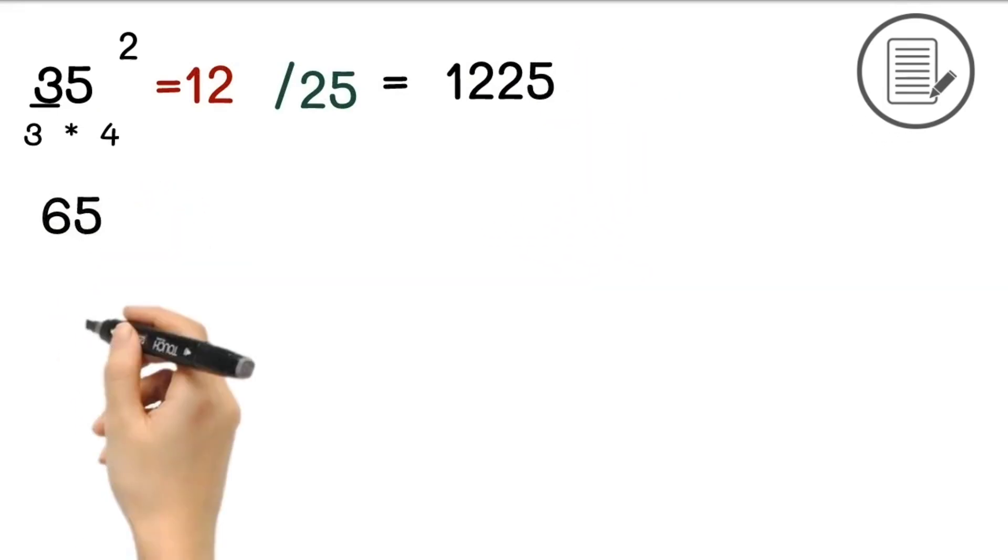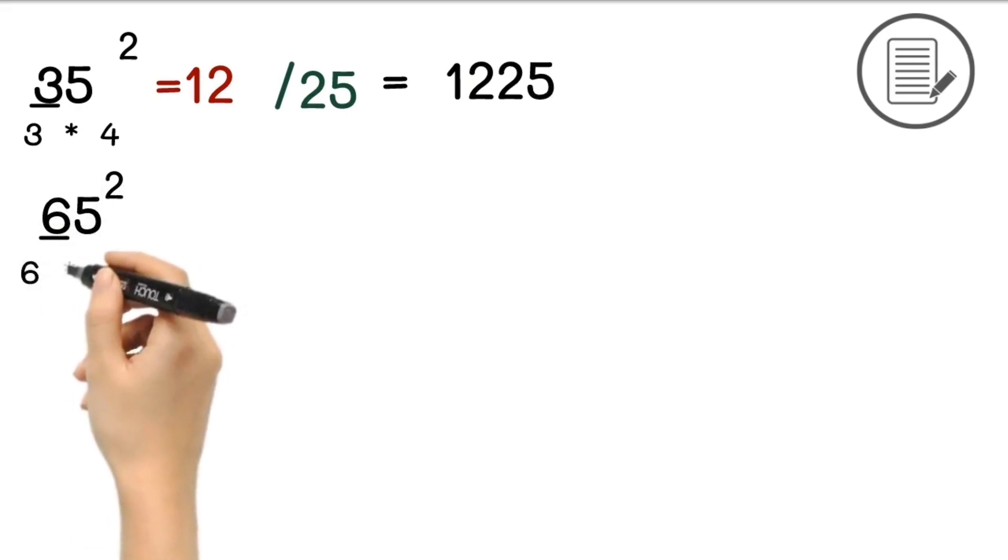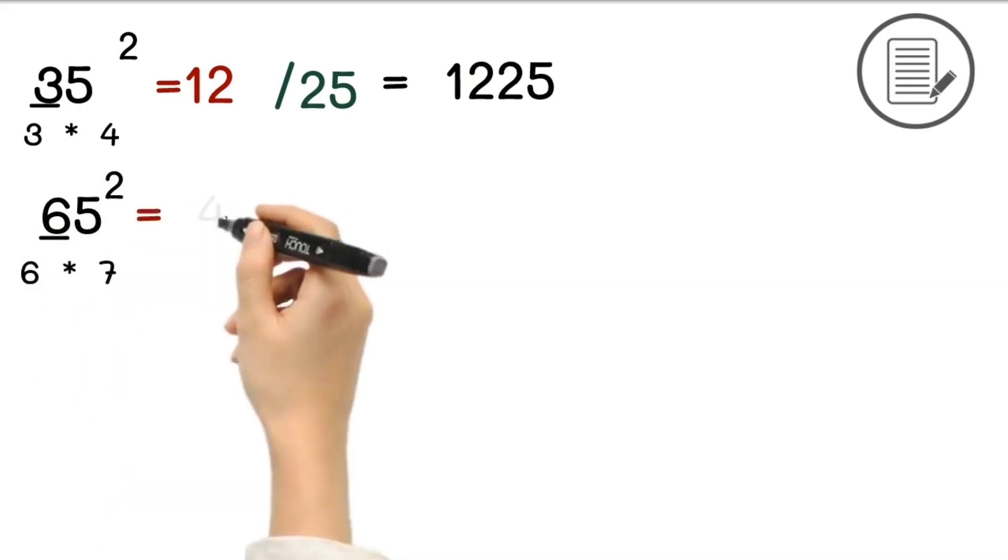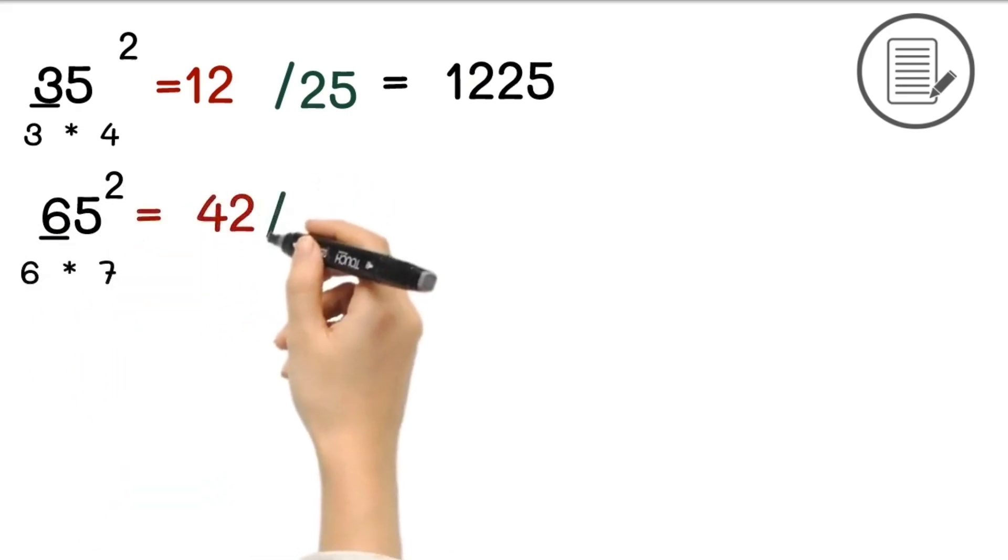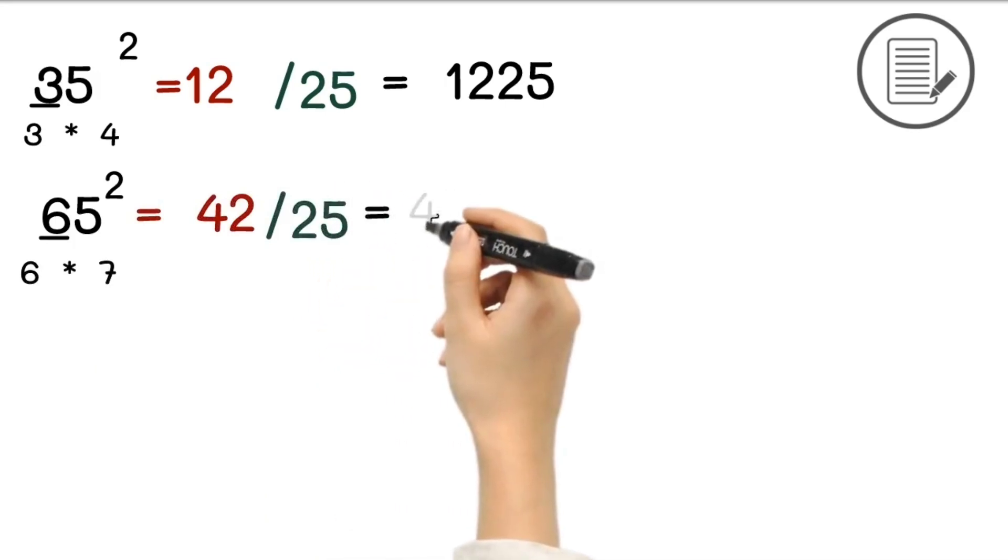Square of 65. Tens digit is 6 and the next number is 7. 6 multiplied by 7 is 42. And the next part is 25. So our answer will be 4225.